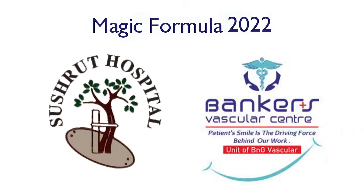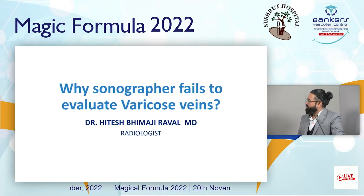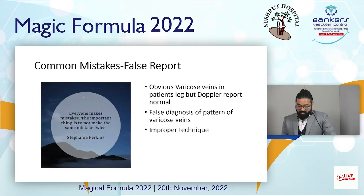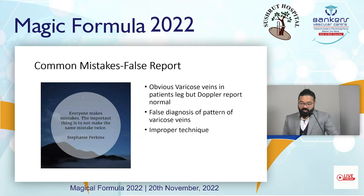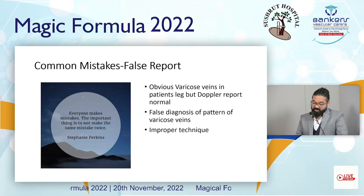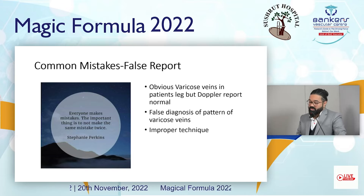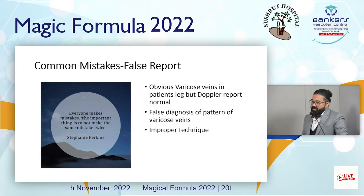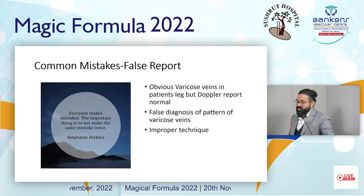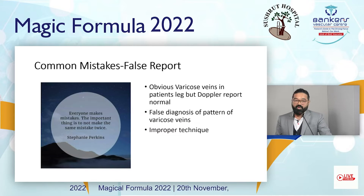Good morning everyone. Today's topic is: why does a sonographer fail to evaluate varicose veins? We will discuss common mistakes and false reports. Everyone makes mistakes, but it is important not to make the same mistake twice. Sometimes there are obvious varicose veins in the patient but reports come back as normal — due to false patterns and improper technique.